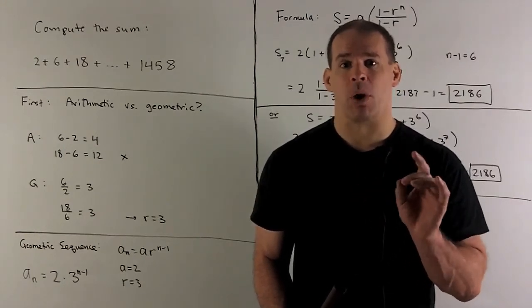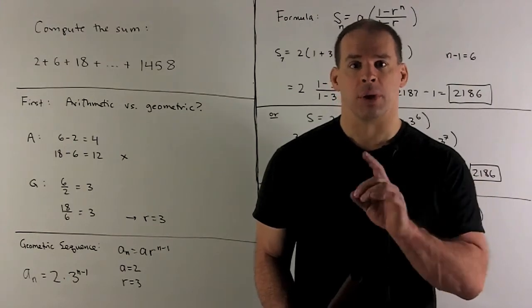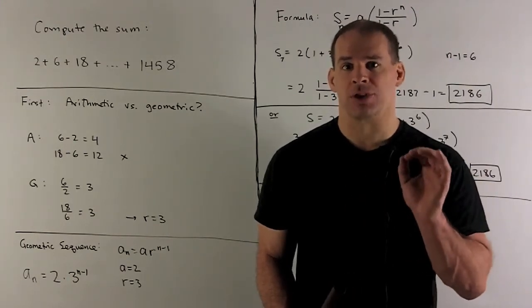We use n minus 1 because I want a1 equal to a, our first term. So the index tells you the number of the term you're looking at.